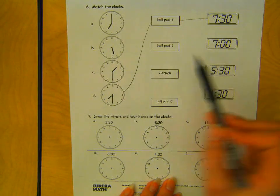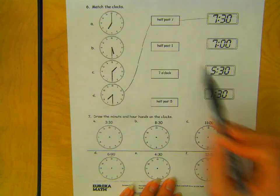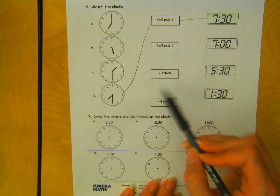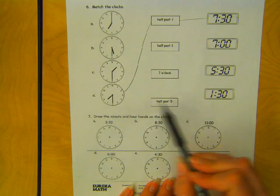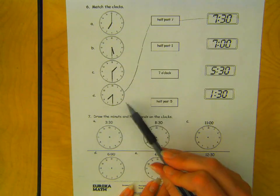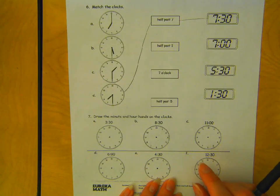This one is half past 1. Match it to an analog clock and a digital clock. This one says 7 o'clock. Match to an analog and digital. And then half past 5, make sure you match it to an analog clock and a digital clock. Go ahead and pause it to give you some time to do that. I'm going to move on and give you directions for number 7.